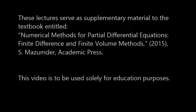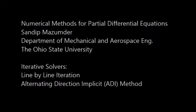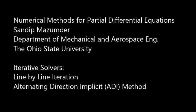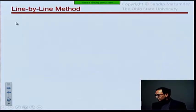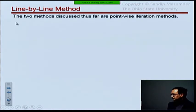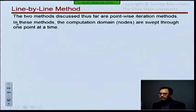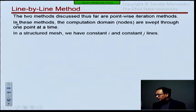We're going to talk about this general class of methods called line-by-line methods. ADI is just a subset of that. So far we've used point-wise iterations, where the computational domain was swept through one point at a time. In a structured mesh, however, we have constant i and j lines, so we can make use of that.